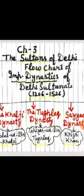So students, do you know why this period is known as Delhi Sultanate? This period is known as Delhi Sultanate because the rulers of this period were known as Sultans and they ruled from their capital city Delhi.